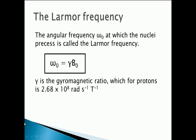The protons precess at a certain angular frequency given the symbol ω₀, called the Larmor frequency. ω₀ depends on two things: gamma, the gyromagnetic ratio, and the strength of the external magnetic field B₀. The gyromagnetic ratio is a constant for any particular particle with spin, and for protons it has the value 2.68 × 10⁸ radians per second per tesla. B₀ is measured in tesla and ω₀ in radians per second. Magnetic field strengths in MRI machines are typically around 1 to 2 tesla, so the Larmor frequency is roughly the same order as the gyromagnetic ratio — hundreds of millions of radians per second.